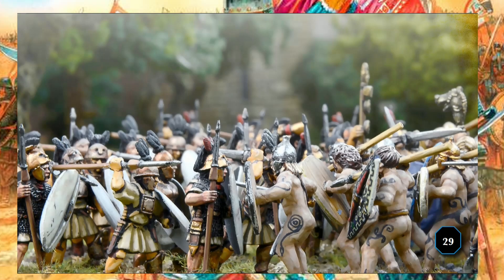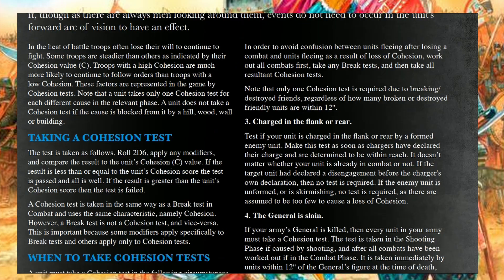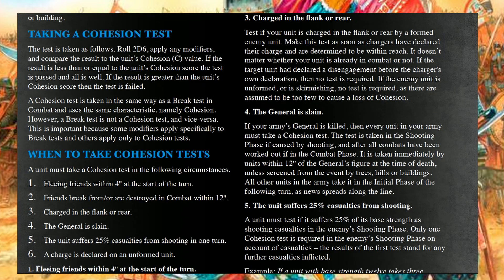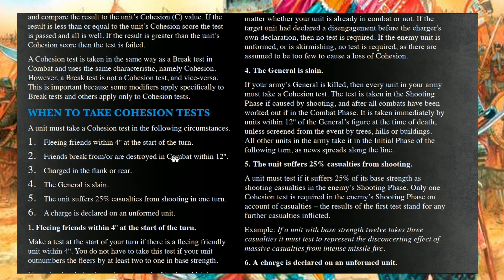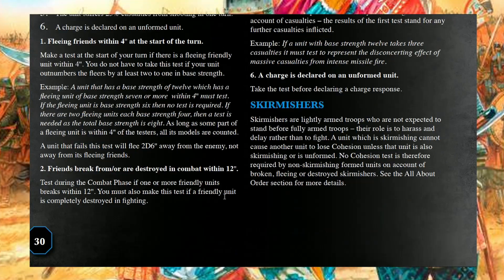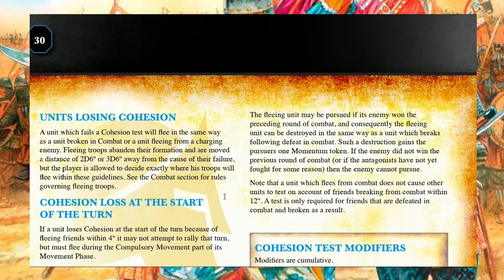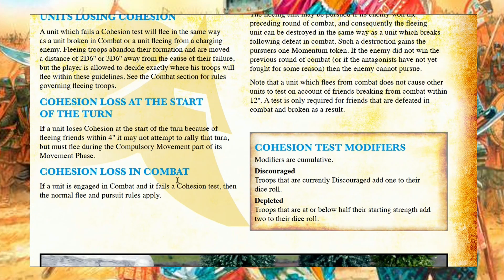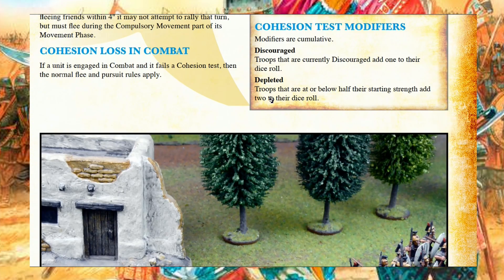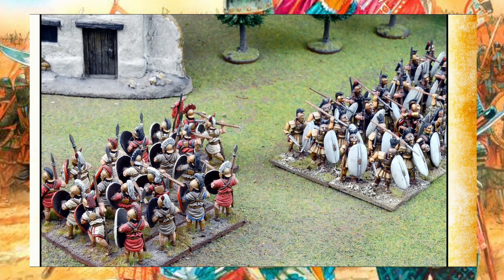Here we go to cohesion tests. There are six reasons for a cohesion test: fleeing friends within four inches at the start of the turn; friends break from or are destroyed in combat within 12 inches; a charge in the flank or rear; the general is slain; the unit suffers 25% casualties from shooting in one turn; a charge is declared on an unformed unit. An unformed unit is when you are reduced to your minimum number of bases as per the original table. It explains how you perform the cohesion tests, and how units become discouraged and depleted.